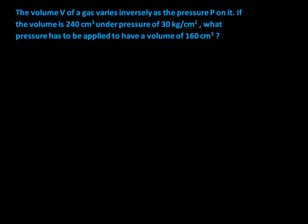In this problem, the volume V of a gas varies inversely as the pressure P on it. If the volume is 240 centimeters cubed under the pressure of 30 kilograms per centimeter squared, what pressure has to be applied to have a volume of 160 centimeters cubed? There's a lot of jargon in here, but we can break this down.